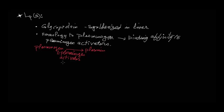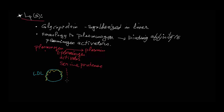Plasminogen activator is the major enzyme responsible for clot breakdown. In this system, plasminogen is activated to plasmin by tissue plasminogen activators, which are serine proteases. Lp(a) has homology to plasminogen and is synthesized in the liver. In the circulation it meets LDL, and the Lp(a) amino acid sequence associates with LDL by a disulfide bridge, forming a lipoprotein particle that is LDL-like, which we call Lp(a) lipoprotein.